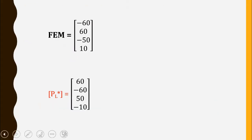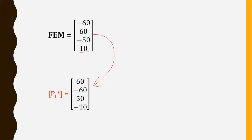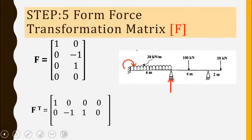The fixed end moment matrix is: minus 60, plus 60, minus 50, and plus 10. Converting to the equivalent joint load matrix — which is just the opposite sign — we get: plus 60, minus 60, plus 50, and minus 10.